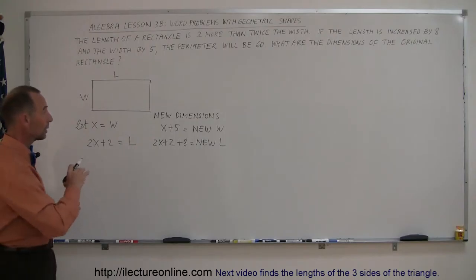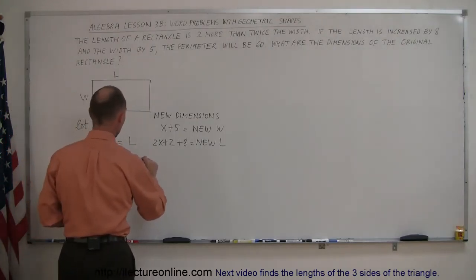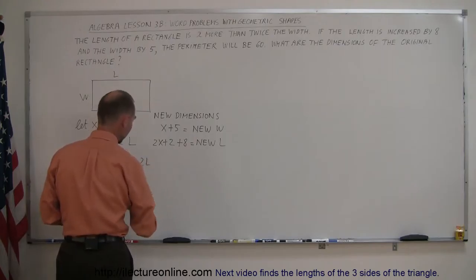Now they tell us that when we take the new dimensions, the perimeter will be 60. That means that two times the length, or the new length, might as well make that clear.